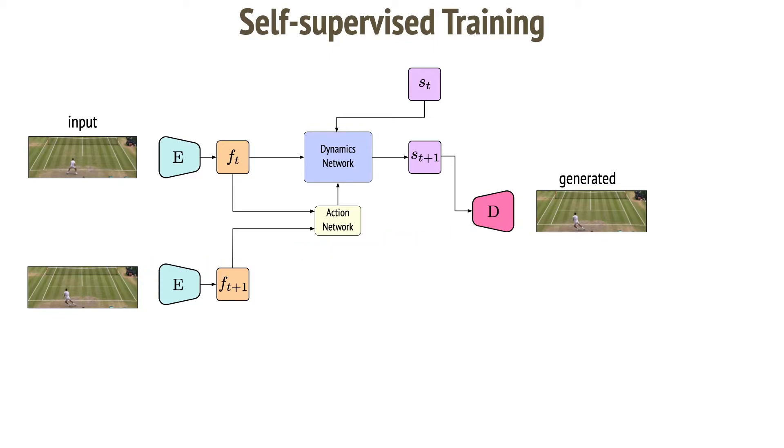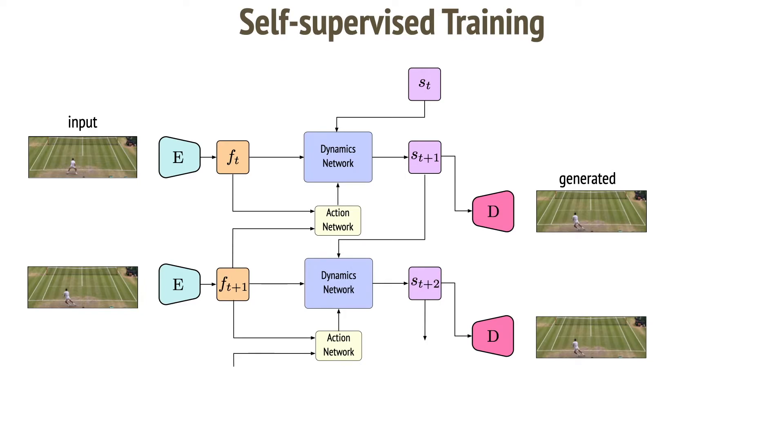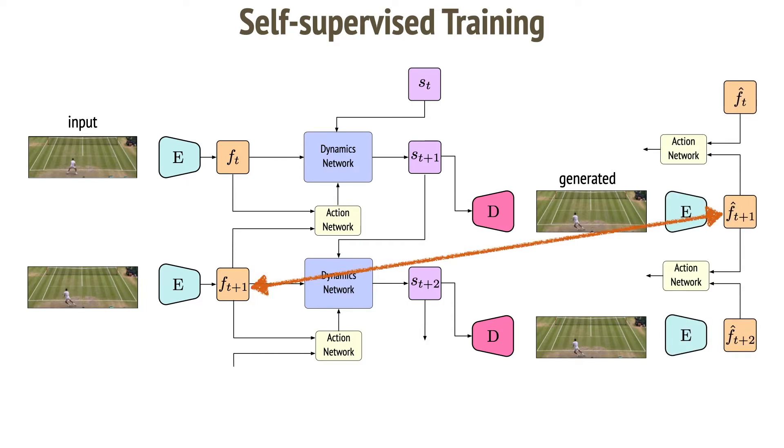We move on by unrolling the network in time, generating several frames. We then embed the generated frames again using the encoder and use self supervision for actions, features, and finally images.